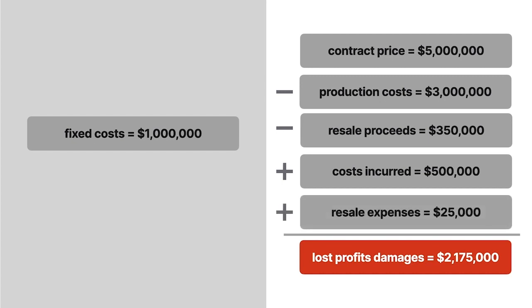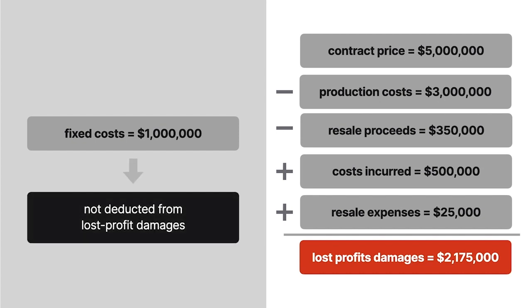Note that the $1 million in allocable fixed costs are ignored. Unlike other damage calculations, fixed and overhead costs, such as rent, taxes, and salaries, aren't deducted from lost profit damages.